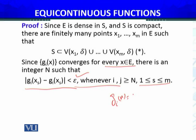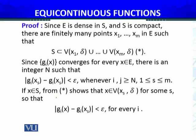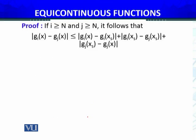Recall that g_i was defined as fn_i(x). Since fn_i(x) is the convergent subsequence, for any x in S there exists x_s in E such that x belongs to V(x_s, delta), so that |g_i(x) − g_i(x_s)| < epsilon by equi-continuity.